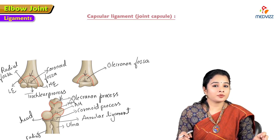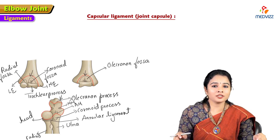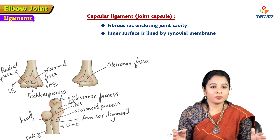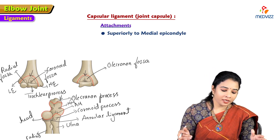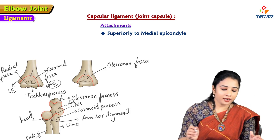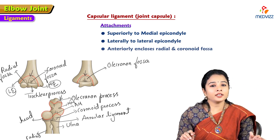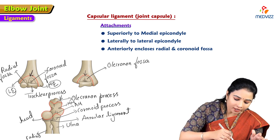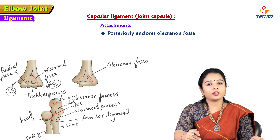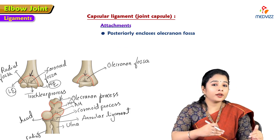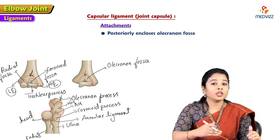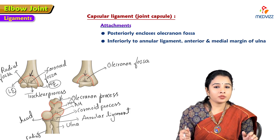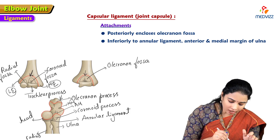Now let us talk about the ligaments of the elbow joint. The first is the capsular ligament, present in all synovial joints. The joint capsule is a fibrous sac enclosing the joint cavity; its inner surface is lined by synovial membrane. It is attached superiorly to the medial epicondyle, laterally to the lateral epicondyle, and anteriorly it encloses the margins of the radial fossa and coronoid fossa. Posteriorly it encloses the olecranon fossa. Inferiorly, the capsule attaches to the annular ligament of the radius.